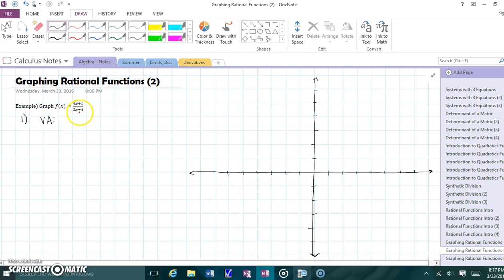Vertical asymptote. Let's find out what makes the denominator equal 0. I'm looking at it and I can tell which one it is. If you're not really sure, just set your denominator equal to 0. 2x equals 4. So x equals 2. That means at 2, we're going to have vertical asymptote.